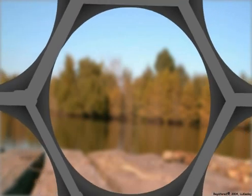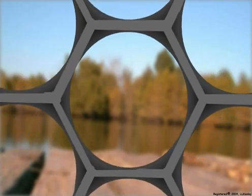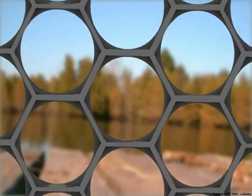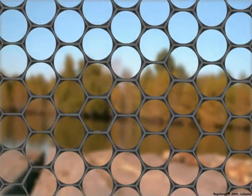Each omitidium views the visual scene according to its position in the compound eye and the width of its lens. The view from each omitidium is then integrated by the nervous system to provide a view of the entire visual scene.